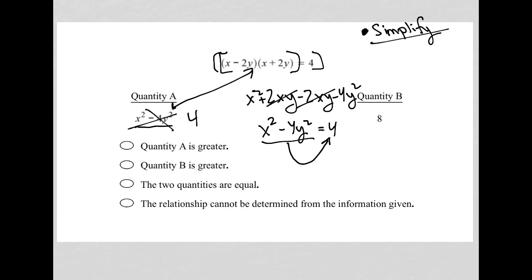So quantity A is really just 4. Quantity B is 8. So obviously then quantity B is greater than quantity A, and therefore this is our answer here.